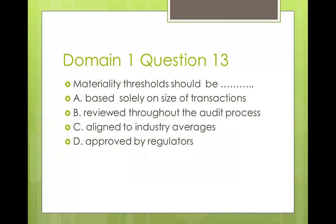Question thirteen: materiality thresholds should be based solely on size of transactions, aligned to all industry rates, approved by regulators, or reviewed as the audit progresses. Auditing standards say materiality is determined by size and nature of transactions — some transactions may look small but reveal serious issues on closer inspection. Industry averages are useful but organization-specific issues must also be considered. No standard says materiality should be determined by regulators alone. As new evidence emerges during the audit, you may need to increase or reduce your materiality threshold. So the best answer is C.